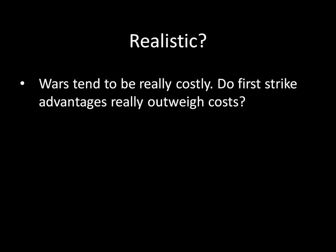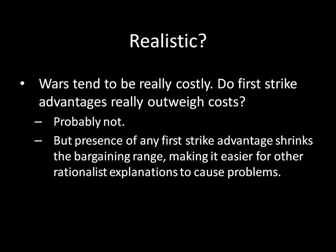The last question is whether this is a realistic explanation for war. It works in theory, but does it occur in reality? Wars tend to be very costly, and for war to be rational here, first strike advantages must outweigh the costs. The literature has largely concluded the answer is probably not — first strike advantages alone tend not to be sufficient to cause war. However, even when first strike advantages aren't large enough to cause war on their own, their presence shrinks the bargaining range, making it easier for other rationalist explanations — preventive war, information problems, issue indivisibilities — to cause conflict.